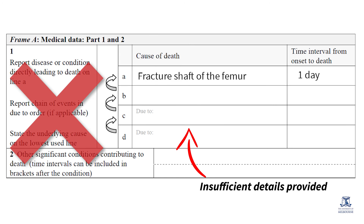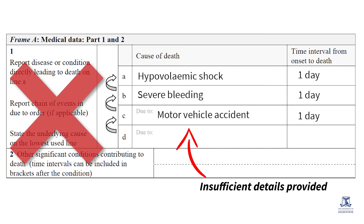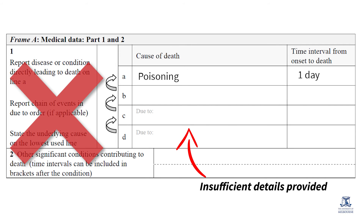The external cause should also be described in as much detail as possible. For example, 'motor vehicle accident' is too broad. Instead, 'pedestrian hit by motor car at public highway' is better as it provides important details for prevention. A vehicle accident may happen in a traffic or non-traffic setting, and the victim may be the driver, passenger or a pedestrian — these details should not be left off the certificate. Similarly, a case of poisoning may be intentional, accidental, of undetermined intent, or due to an adverse effect in therapeutic use. Specification of all these circumstances is essential to accurately code the cause of death.